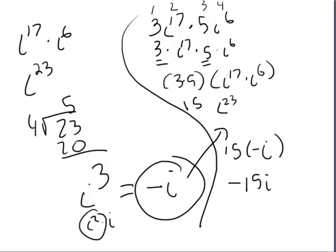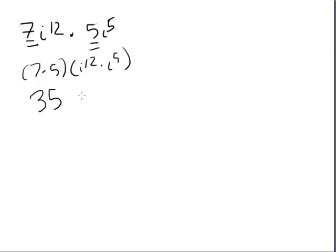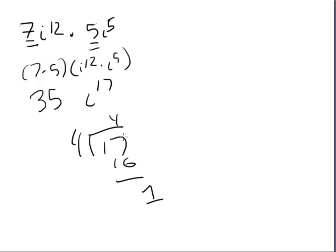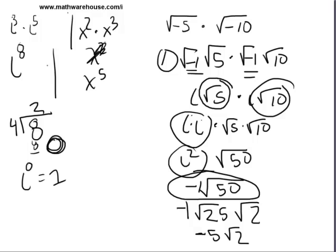Let's try one more: 7i to the 12th times 5i to the fifth. Group the reals: 7 times 5 is 35. Group the imaginary terms: i to the 12th times i to the fifth is i to the 17th. Take four into 17 — the remainder is one, so i to the 17th equals i to the first. The answer is 35i. That's it for multiplying imaginary numbers. If you'd like more practice and a free worksheet with an answer key, come to mathwarehouse.com slash i.